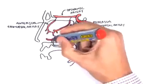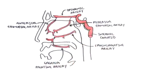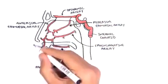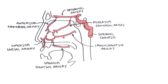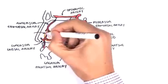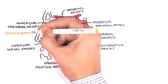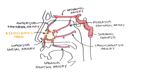The greater palatine artery is also another branch, an eventual branch of the maxillary artery. Finally, the superior labial artery is a branch of the facial artery and also converges somewhat to the same area. This area is essentially where a lot of these arteries meet up, and this is called Kesselbach's area or Little's area, and this is a common source or site of nosebleeds.